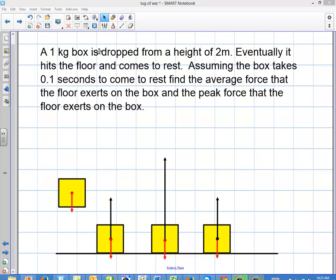So this problem says that there's a 1 kilogram box dropped from a height of 2 meters. Eventually it hits the floor and comes to rest. Assuming the box takes 0.1 seconds to come to rest, find the average force that the floor exerts on the box and the peak force that the floor exerts on the box.